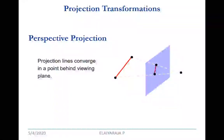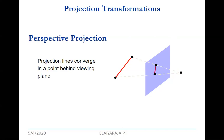We are going to see about perspective projection, where projection lines converge in a point behind the view plane. In perspective projection we see one-point, two-point, as well as three-point perspective. The best example to explain the difference between parallel and perspective projection: in parallel projection we consider the direction of projection.